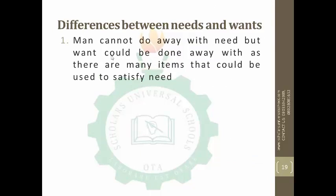What are the differences between wants and needs? Number one: man cannot do away with needs. You cannot do away with food, shelter, or clothing. But wants could be done away with — there are many items that could be used to satisfy needs. For instance, if you need food and you say you want rice and beans, but you can only find just rice — will you not be satisfied? You will survive. Man cannot do away with needs, but you can do away with wants; you can pick some things from what you want and still survive.